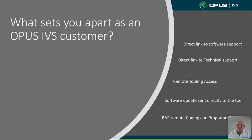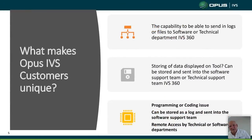What sets us apart is our direct link to software support, which is essential in this modern day and age. We can send in a request from the tool — whether it's software or a technical request. We can use remote tooling access, carry out software updates directly to the tool, and we have remote WRAP coding and programming. The capability to send in logs is essential for us to guide you on how to fix the vehicle software.